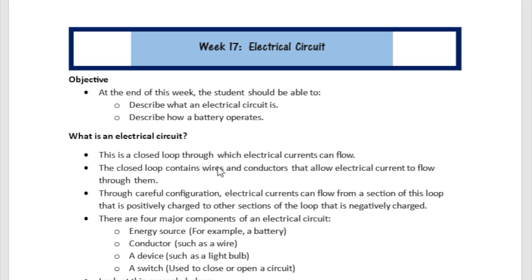The closed loop contains wires and conductors. What are the conductors? They are the type of materials that will allow electrical currents to flow through them. And through careful configuration, electrical currents can flow from a section of this loop that is positively charged to other sections of the loop that is negatively charged.